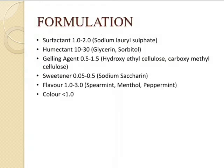Now let's see the formulation of toothpaste — the ingredients along with their concentrations and categories. Binders such as hydroxyethyl cellulose and carboxymethyl cellulose are used at 1.0 to 2.0%. Sweeteners such as sodium saccharine are used at 0.05 to 0.5%. Flavors — including spearmint, menthol, and peppermint, which are mint subtypes — are used at 1.0 to 3.0%. Colors are used at less than 1.0%.